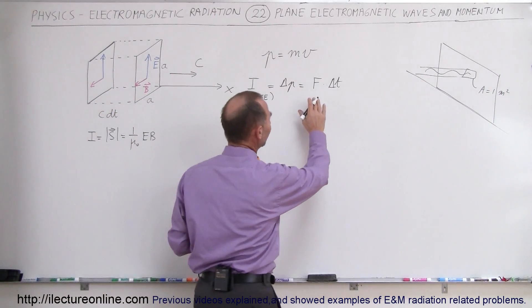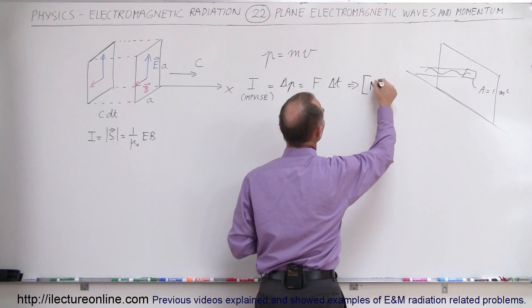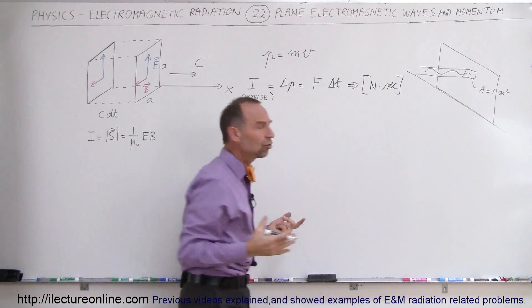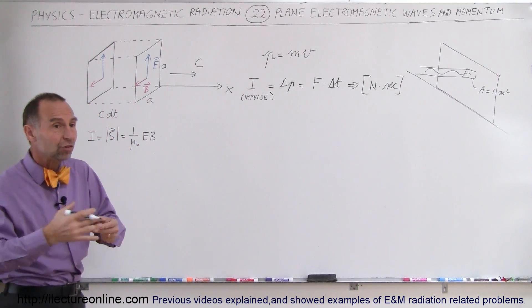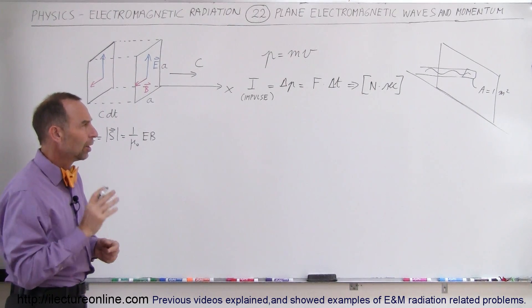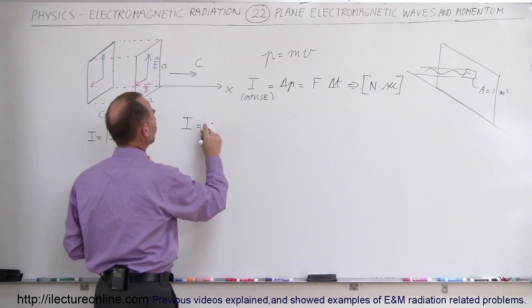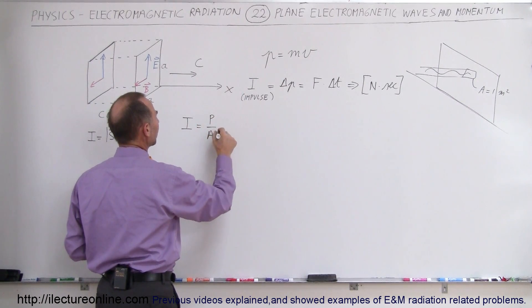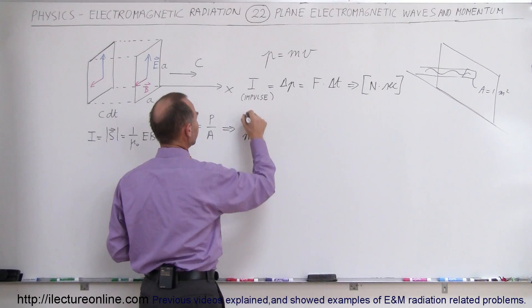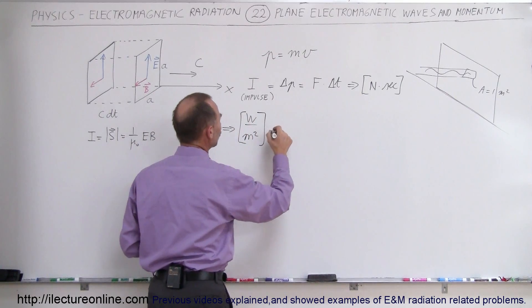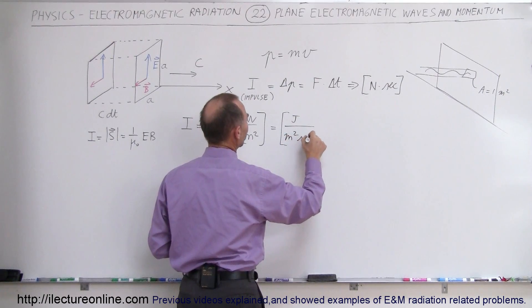The units for impulse would be the same units as force times time, so the units would be newtons times seconds. We need an expression that has units of newtons times seconds, which will then be force times time — the same as impulse or the change in momentum. Remember the units for intensity: intensity was equal to power divided by area, so the units for power divided by area were watts per square meter. And a watt was a joule per second, so that would be joules divided by meter squared times seconds.